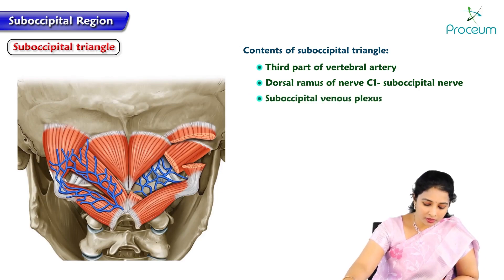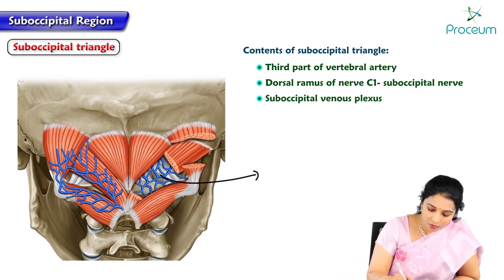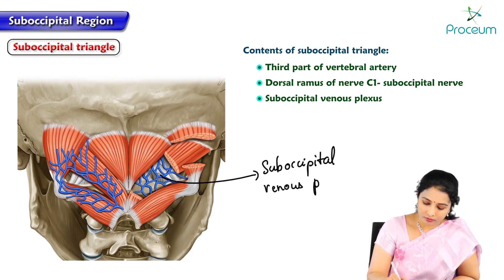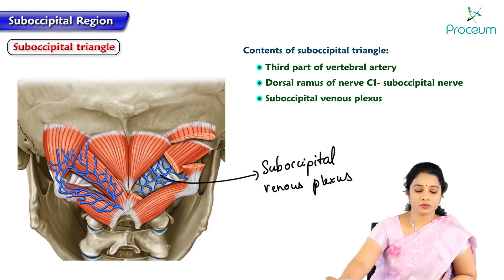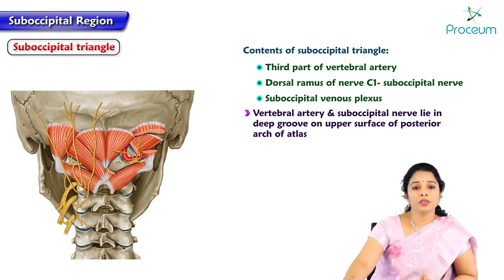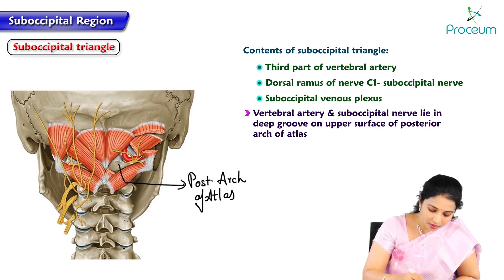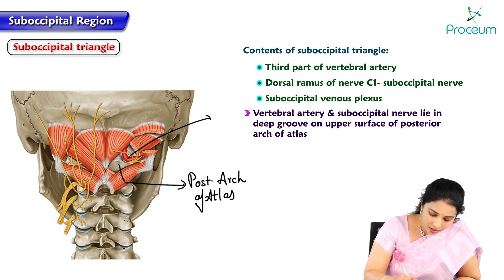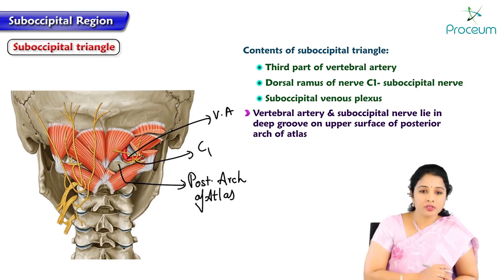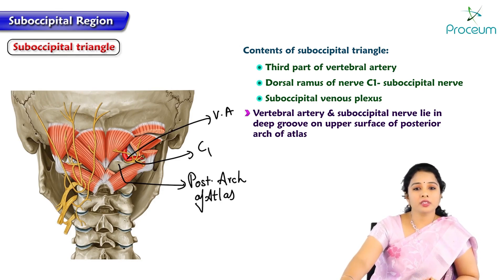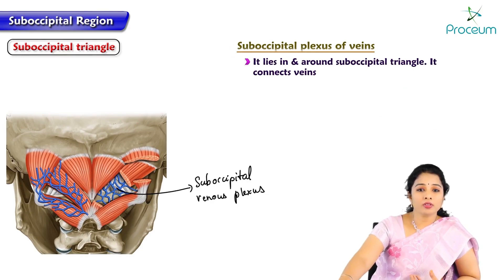The next content is the suboccipital venous plexus. We can see several veins within the triangle forming the suboccipital venous plexus. The vertebral artery and suboccipital nerve lie deep in a groove on the upper surface of the posterior arch of atlas. The suboccipital plexus of veins, vertebral artery, and suboccipital nerve C1 — the first cervical nerve dorsal ramus — are present in the groove on the upper surface of the posterior arch of the atlas. The suboccipital plexus of veins lies in and around the suboccipital triangle.